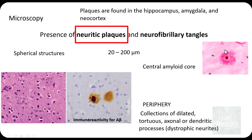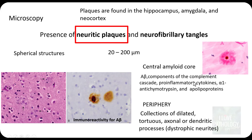So centrally you have the amyloid core and peripherally you have dystrophic neurites — that is the neuritic plaque. The central amyloid core is made up predominantly of amyloid beta protein, as well as components of the complement cascade, pro-inflammatory cytokines, alpha-1-antichymotrypsin, and apolipoproteins. The predominant component is A-beta-42.